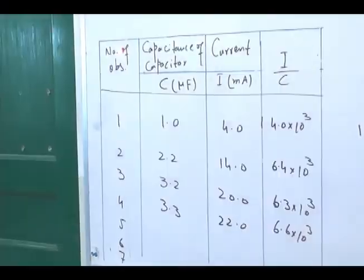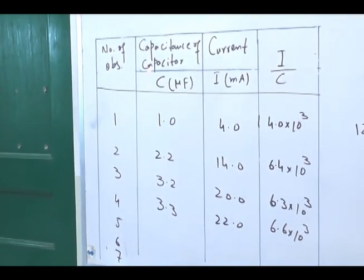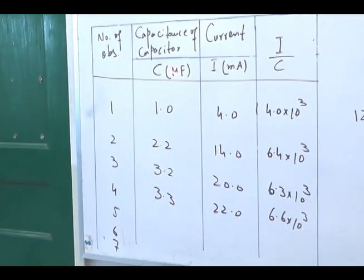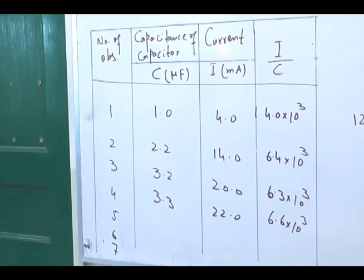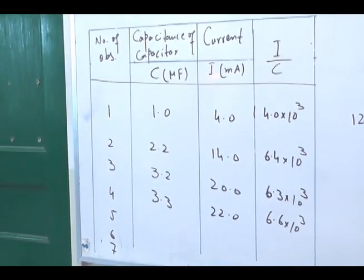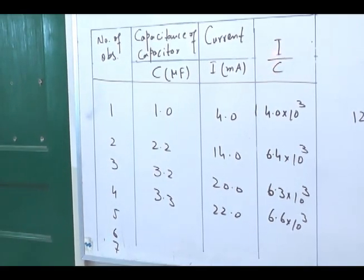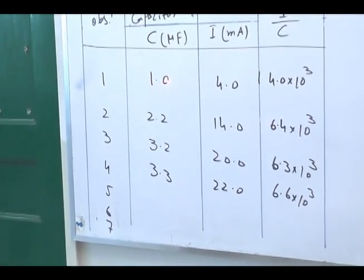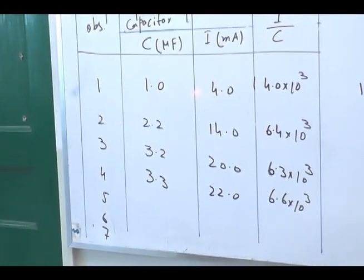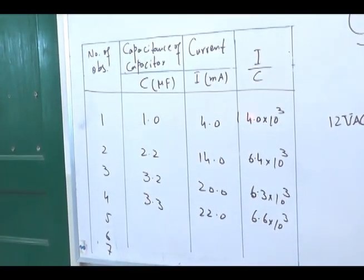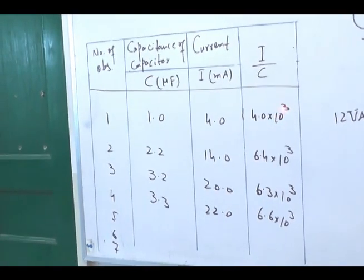We will put these values in a table. The first column is the number of observation. The second column is capacitance of the capacitor, represented by C and measured in microfarad. The third column is current measured from the milli-ammeter, represented by I. The last column is the ratio between current and capacitance. For the first reading, capacitance is 1.0 microfarad, current is 4 milli-ampere, and the ratio I/C is 4.0 × 10³.